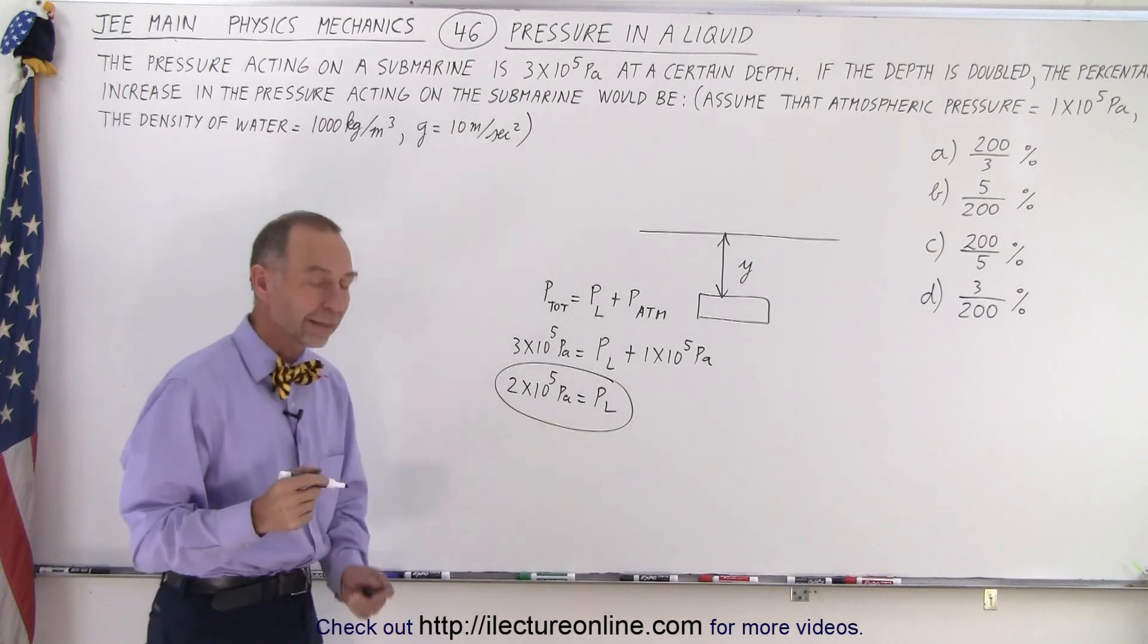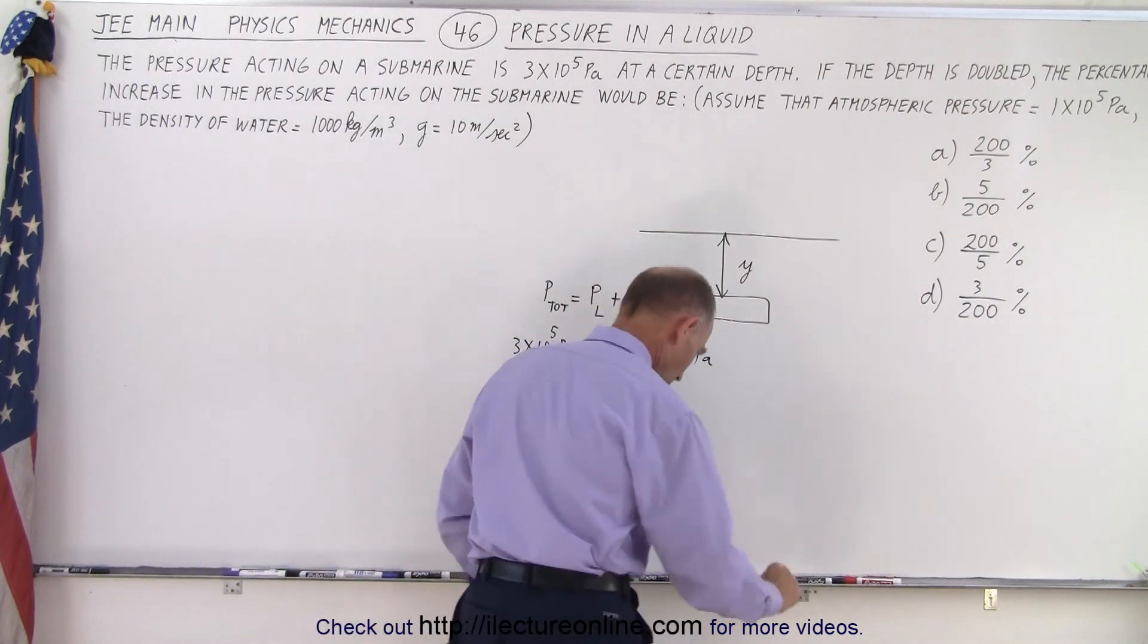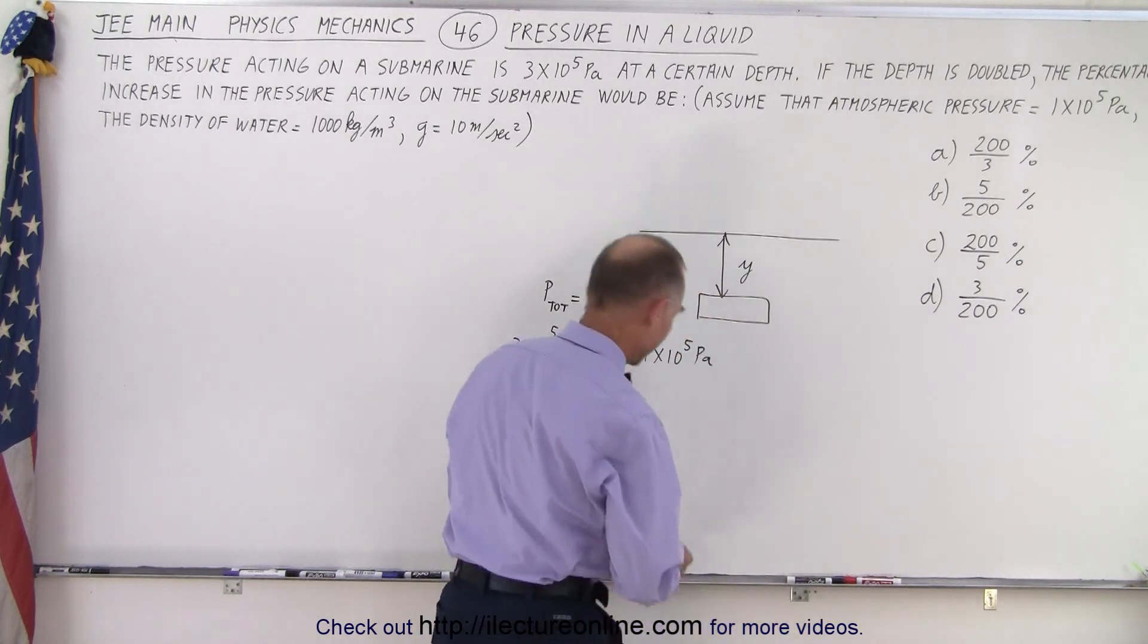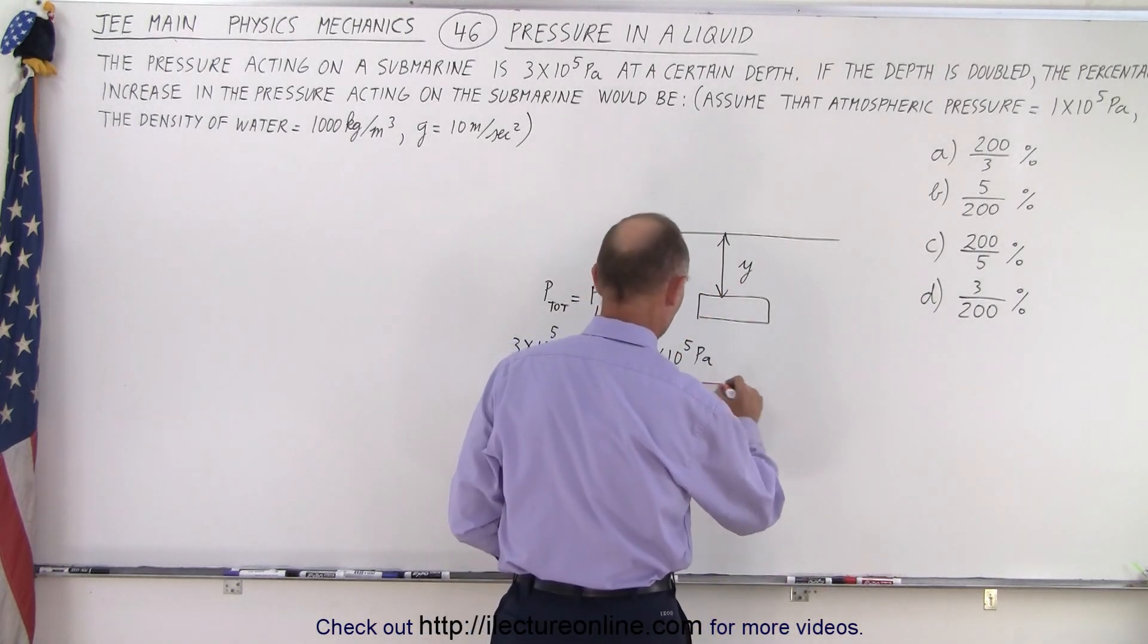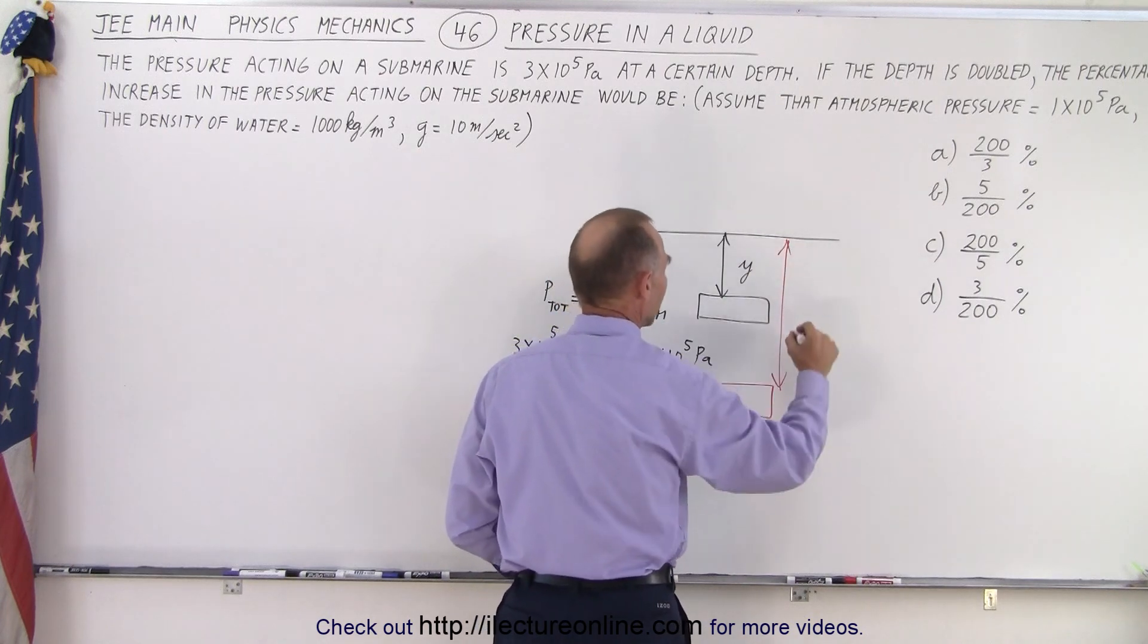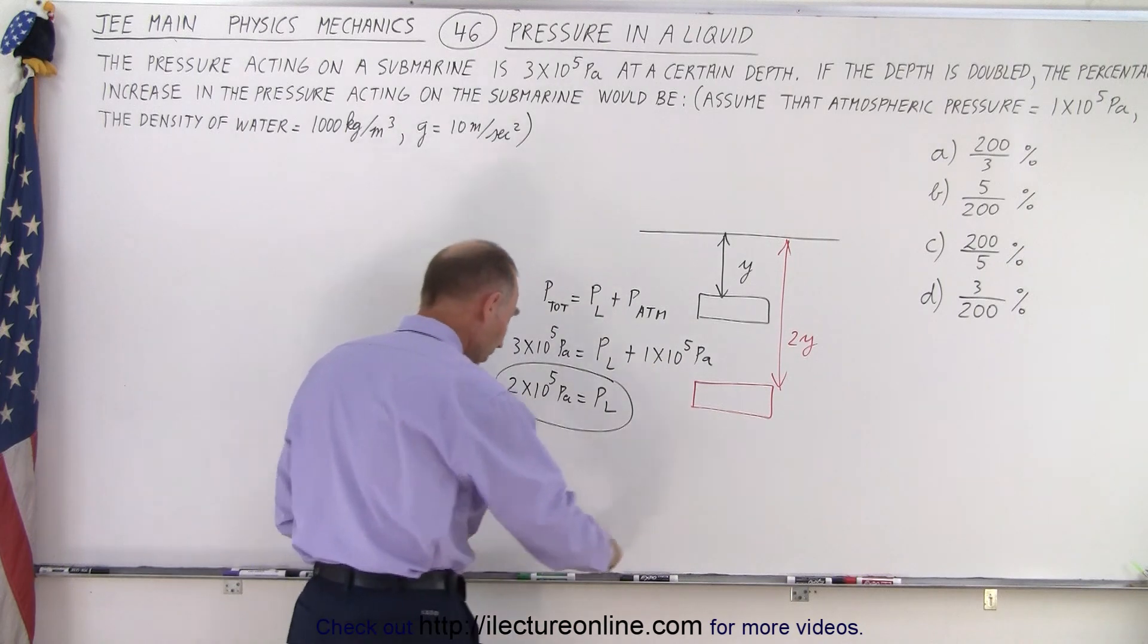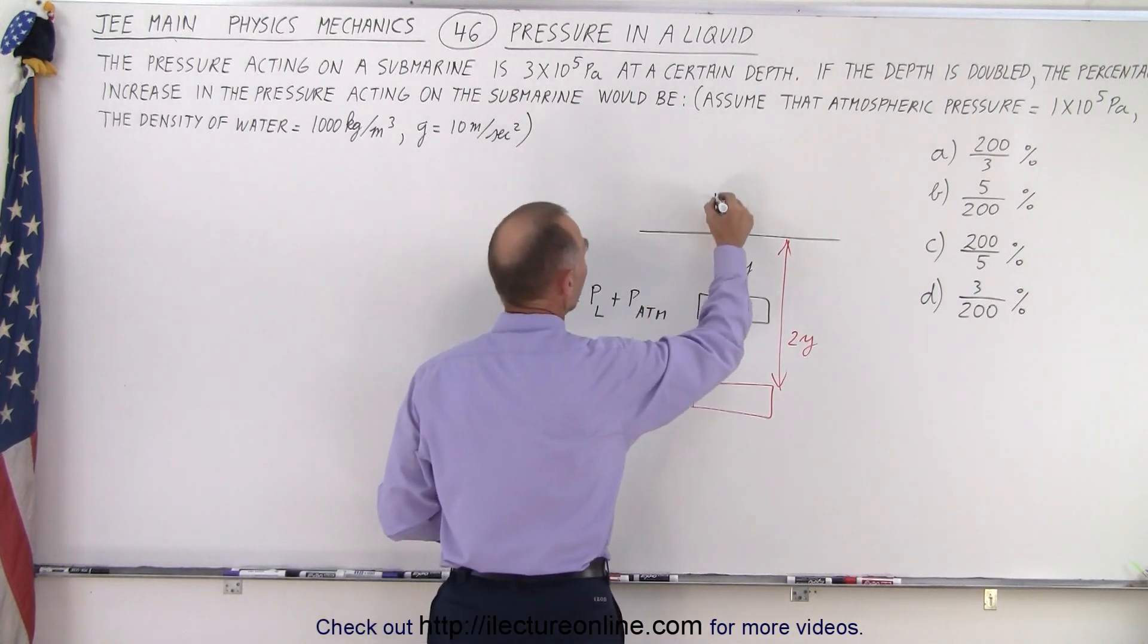Now they tell us that the depth is doubled. So now we take the submarine and put it at a depth where the depth equals 2y. Obviously the atmospheric pressure above the water does not change.